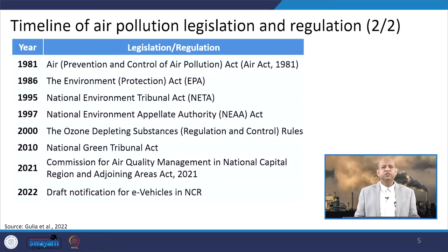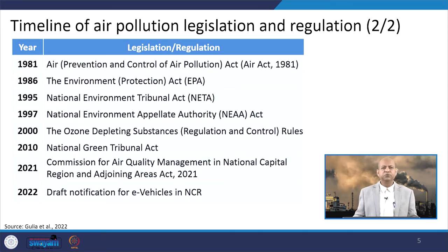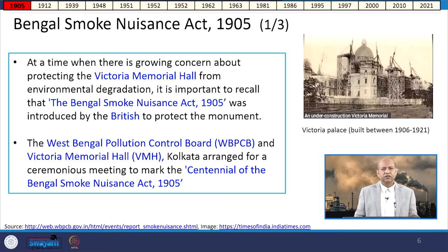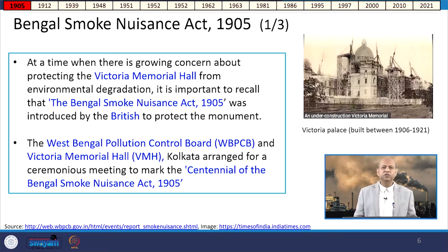In 2010, the National Green Tribunal Act was enacted, and in 2021, we had the Commission for Air Quality Management in National Capital Region and Adjoining Areas Act. Just recently, there was also a draft notification for e-vehicles in the NCR. Looking at each of these acts, we can understand the background in which they were enacted and their scope in improving air quality.